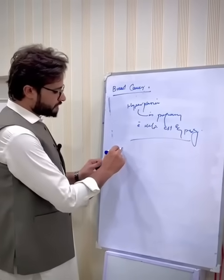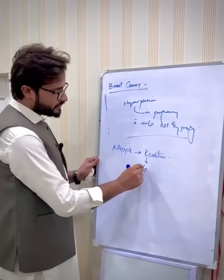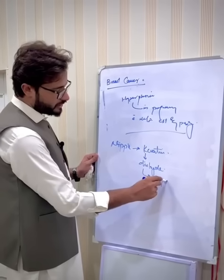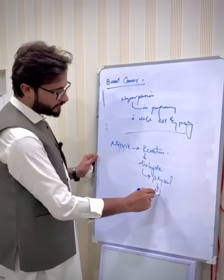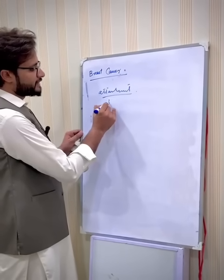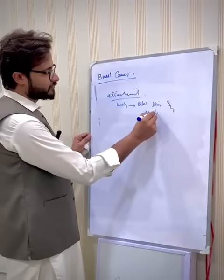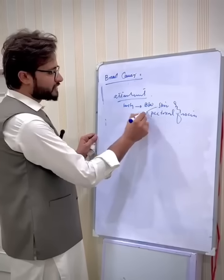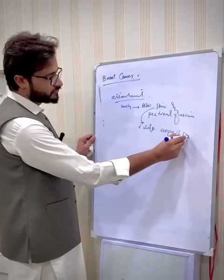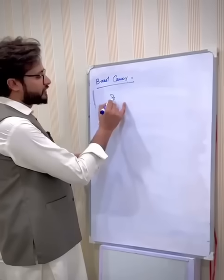The nipple duct is plugged by keratin. When this keratin is dislodged from the nipple duct, we can see physiological secretion on the surface of the nipple, which can vary in color. The breast is loosely attached between the skin and pectoral fascia. To the skin, it is attached with the help of Cooper's ligament, which extends from the clavicle superiorly down to the abdominal wall.